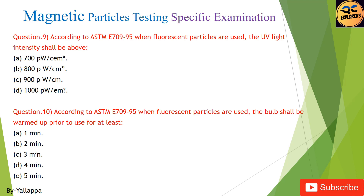Question 10: According to ASTM E709-95, when fluorescent particles are used, the bulb shall be warmed up prior to use for at least: (A) 1 minute; (B) 2 minutes; (C) 3 minutes; (D) 4 minutes; (E) 5 minutes.